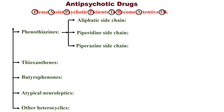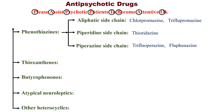Now let us see the drug examples. Aliphatic side chain examples: chlorpromazine and triflupromazine. Piperidine side chain example: thioridazine. Piperazine side chain examples: trifluoperazine and fluphenazine. Note that all drugs under phenothiazines end with '-zine' (Z-I-N-E).